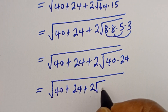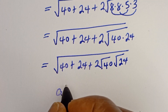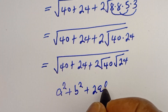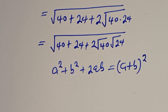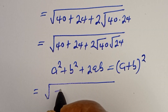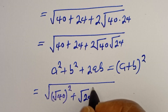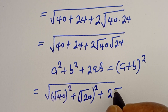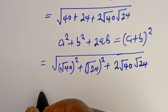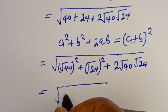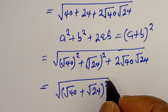We note that if you have A squared plus B squared plus 2AB, this equals (A plus B) all squared. So this is equal to square root of root 40 squared plus root 24 squared plus 2 times root 40 times root 24, and the whole expression equals square root of (root 40 plus root 24) all squared, and the square root and square cancel.